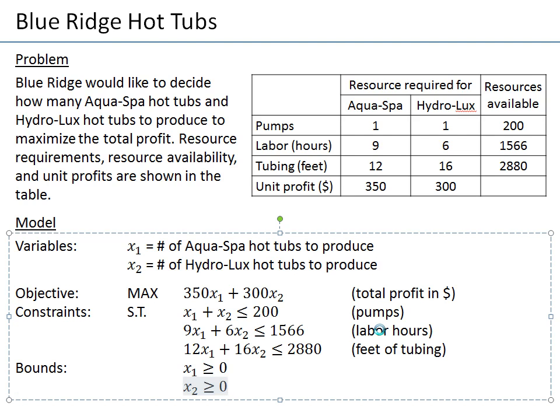As it stands, this model is a linear programming model because it has one objective and a number of constraints, and all objective and constraint functions are linear functions — a coefficient times a variable plus a coefficient times another variable. Therefore we call this a linear programming model, and it can be solved using certain methods which will be discussed later on.